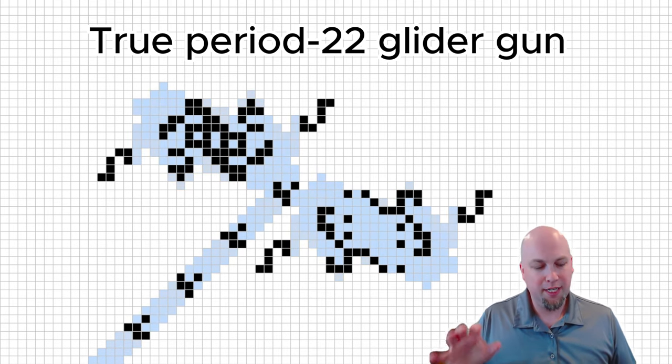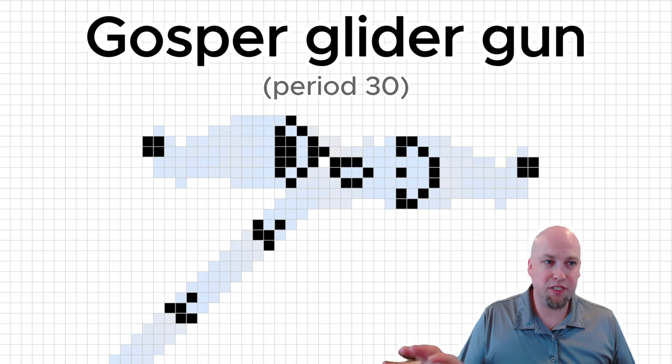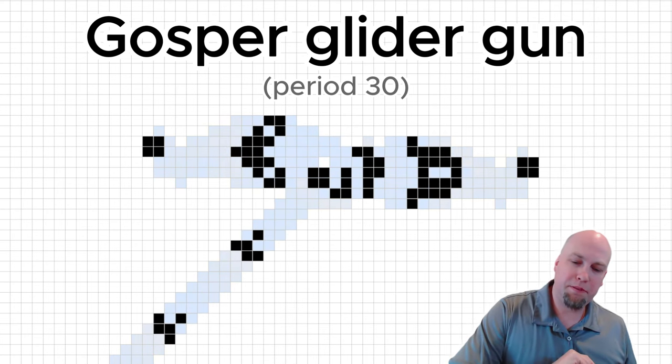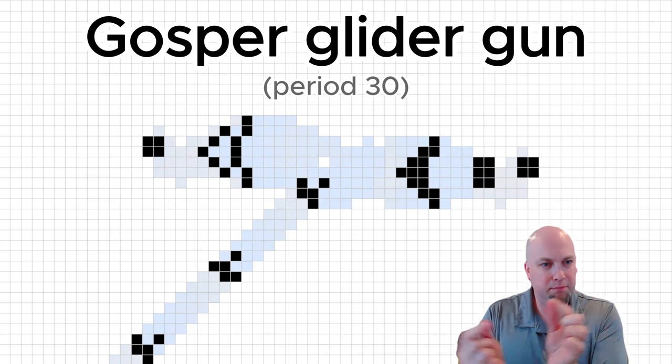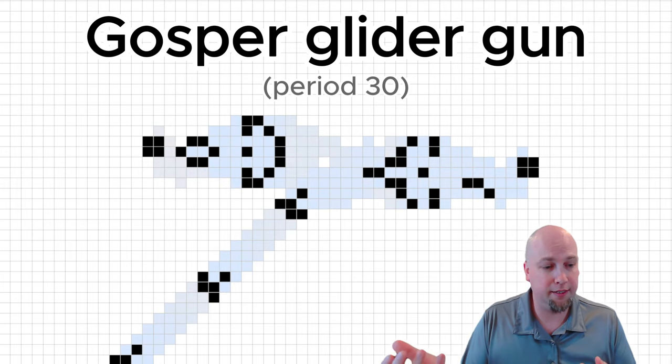So, if we go back, for example, the Gosper glider gun, that very first example that we saw, the output stream of gliders was period 30, and also the mechanism creating it, like those queen bees bouncing back and forth, that was also period 30. So, that's a true-period glider gun.